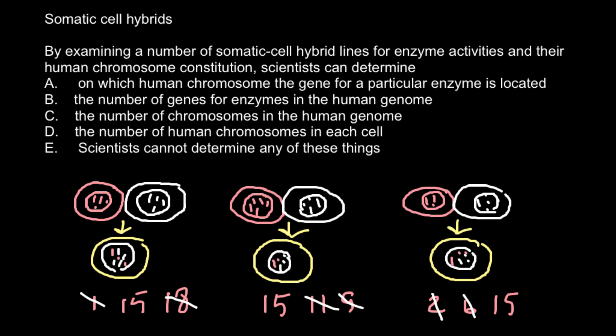Because here we can find this enzyme but there is no chromosome 2 and 6 left in this cell line. And the same is here. But we see that in all three cell lines we can find chromosome number 15, and we can now say for sure that this enzyme is located on chromosome 15.